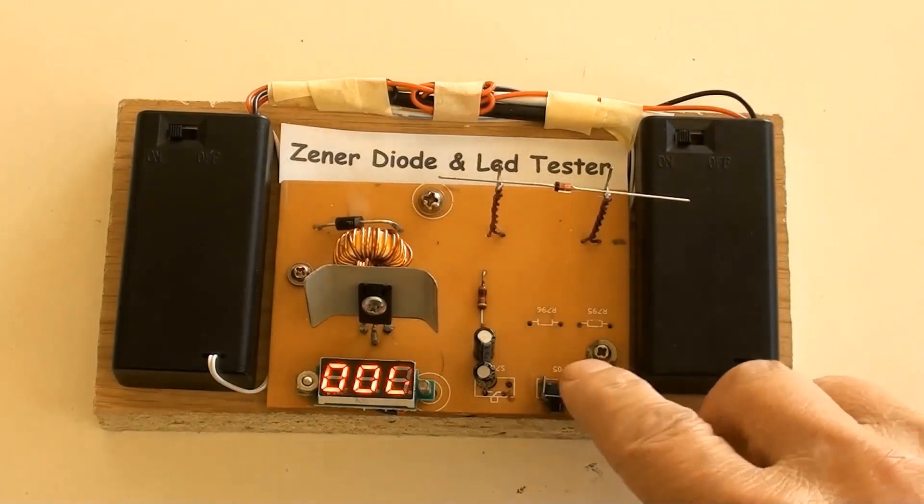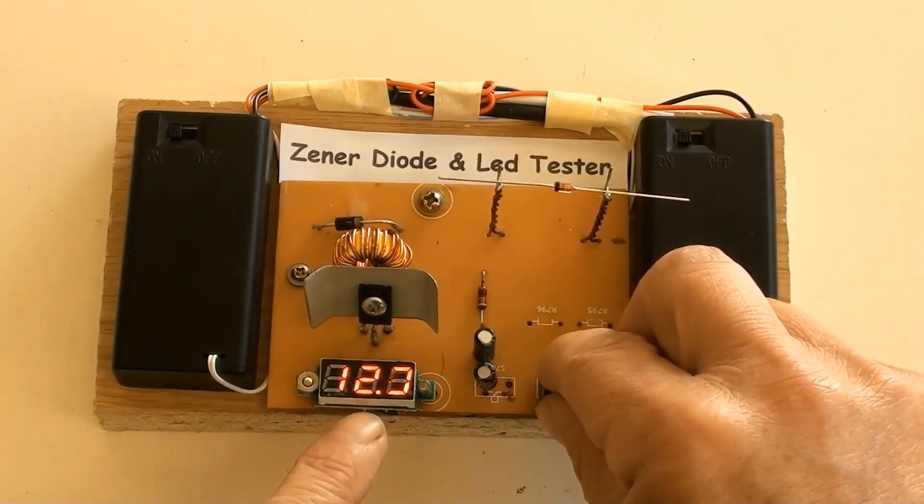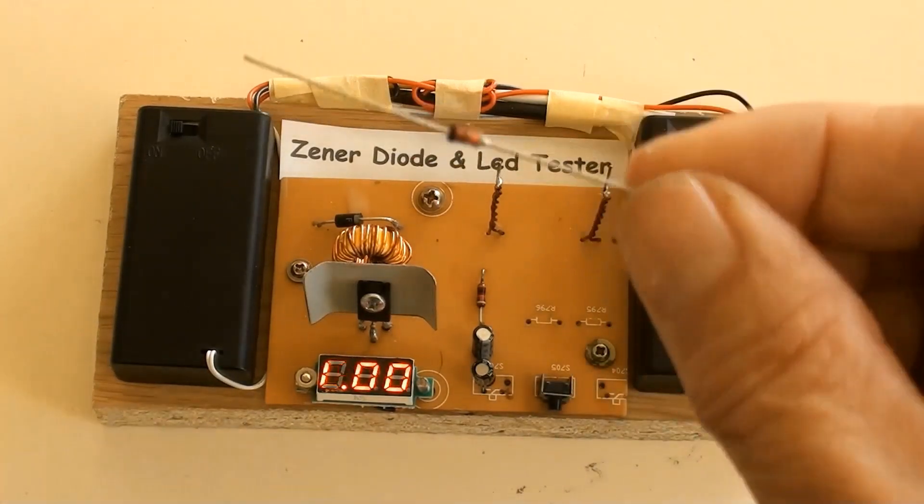To test this Zener diode. It showed 12 volt. So this is a 12 volt Zener diode.